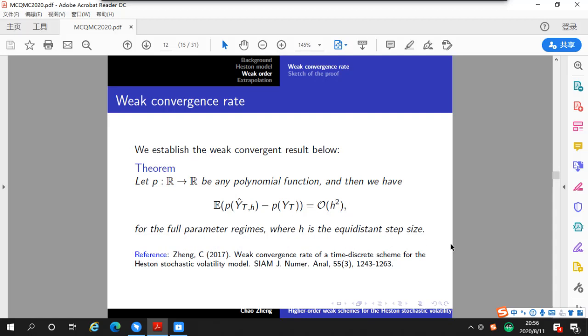Here, we establish the weak convergence result below. Let P be any polynomial function, and then we have this result, which says that for polynomial payoff, the weak order is 2, and the result is valid for the full parameter range where h is equal distance step size. Different from the usual analysis, which approaches the model coefficients, our proof focuses on the properties of the variance process.